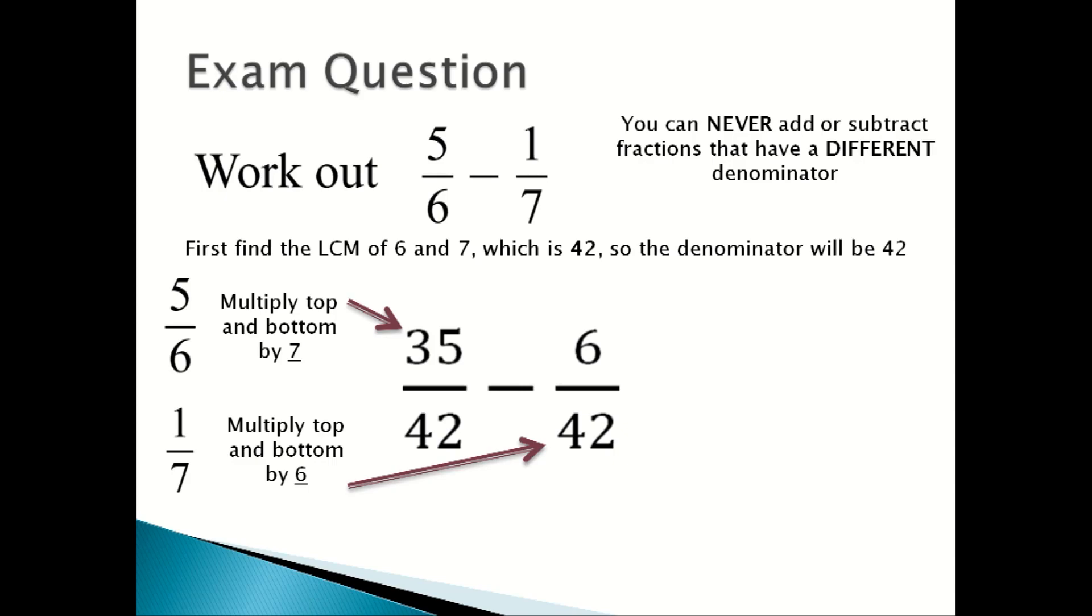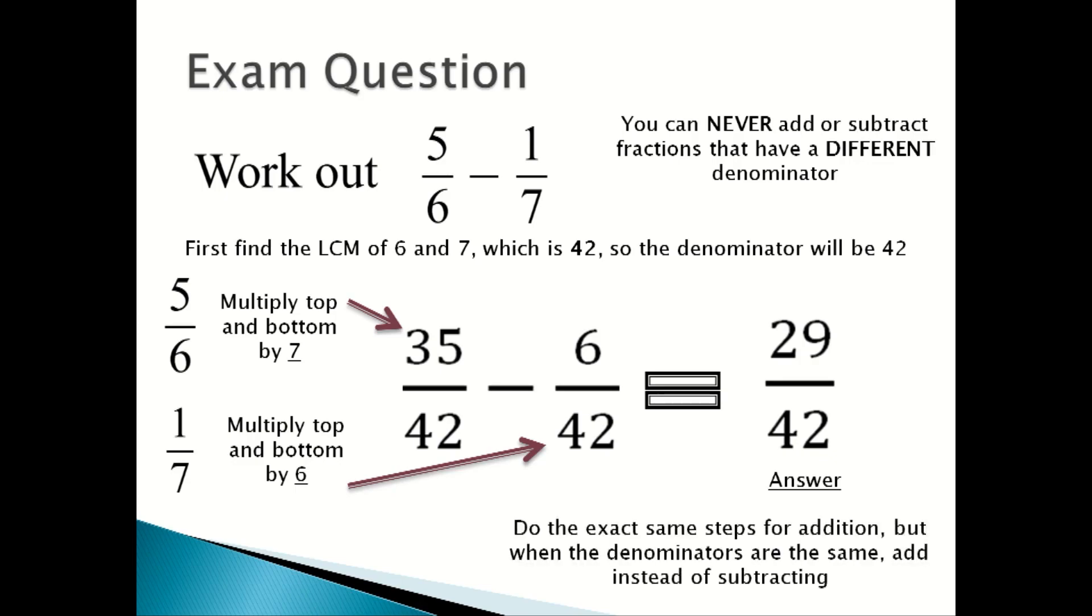Next, you'll do 35/42 - 6/42, which equals 29/42, and that is your answer. So 5/6 - 1/7 is equal to 29/42. Always remember, it's the exact same steps for both addition and subtraction, but when your denominators are the same, you either add or subtract depending on the question.